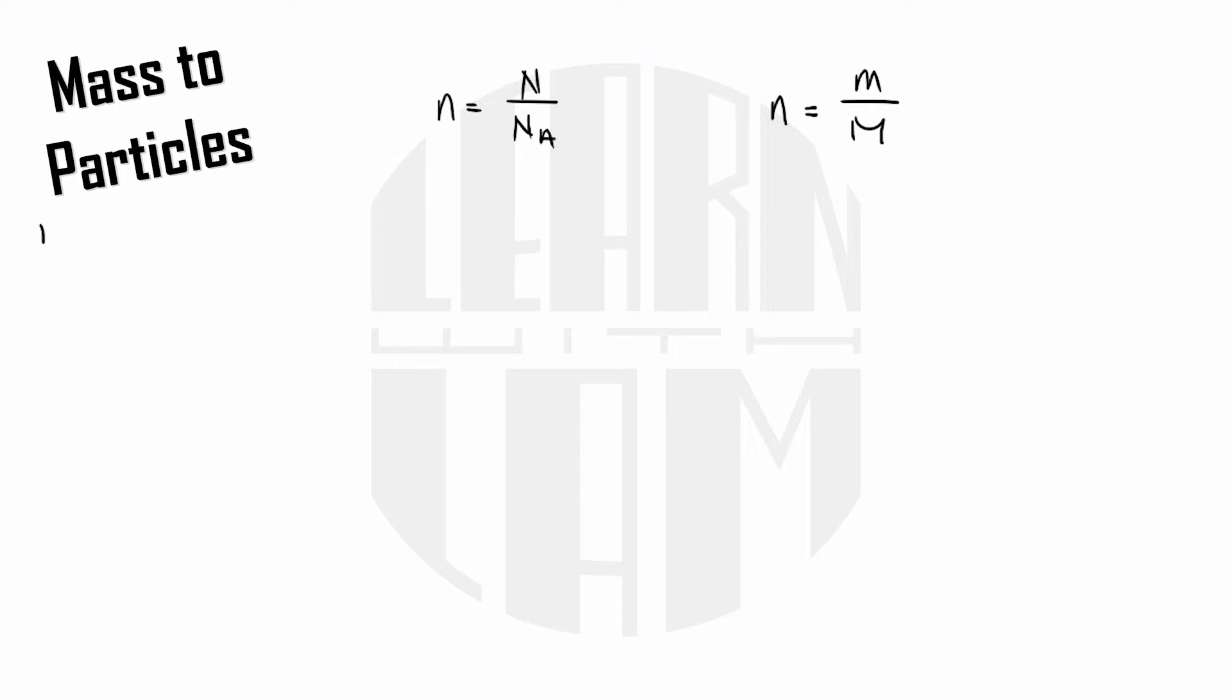Just a reminder here that little n represents moles and its unit is mole. Big N represents any kind of particle. NA is Avogadro's constant which is 6.02 times 10 to the 23. Little m is mass, its unit is grams, and big M is molar mass and its unit is grams per mole.